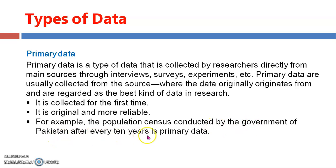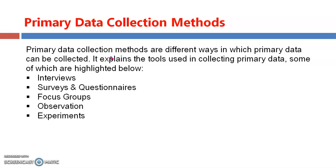For example, the population census conducted by the government of Pakistan after every ten years is primary data. When conducting a census, data is gathered from different parts of the country — people are assigned to go door to door, house to house, street to street to collect data and complete the census. This is primary data: it is original, it is first-hand, and the researcher is physically involved in collecting it.